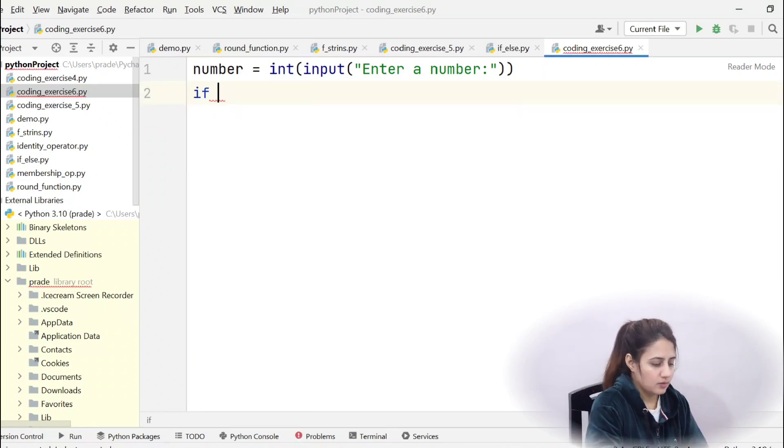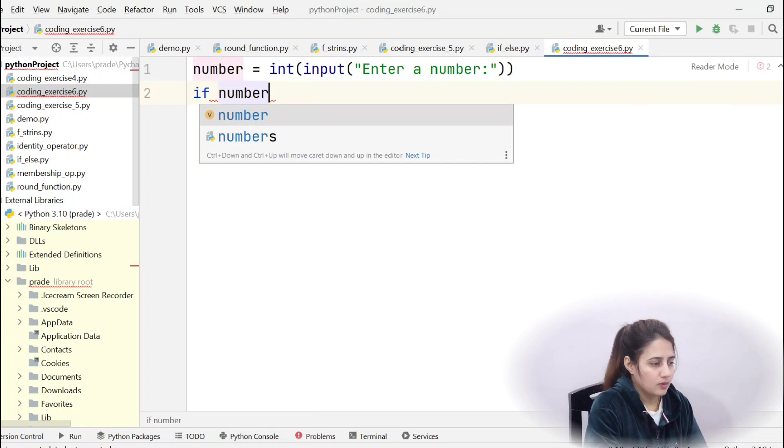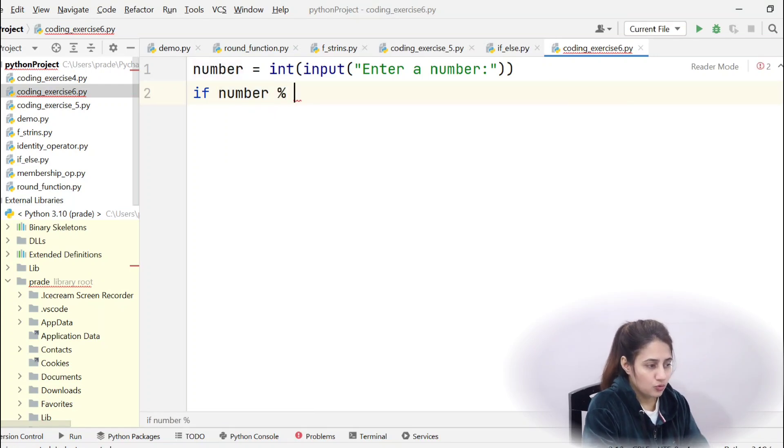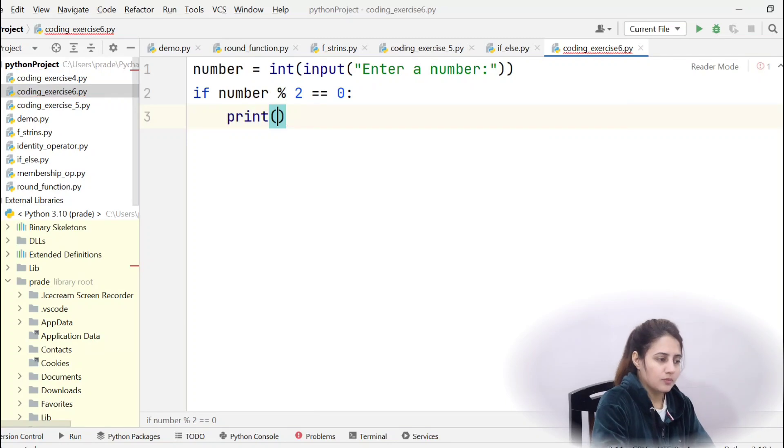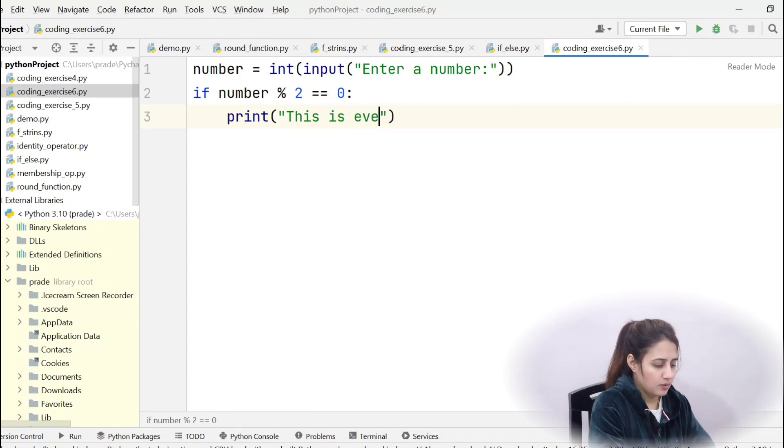Now we have a number, so put some condition. If this number mod 2 equal to equal to 0, colon, print. Obviously this is what? This is even number.